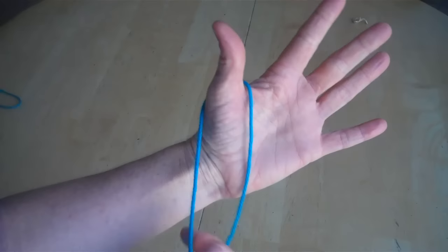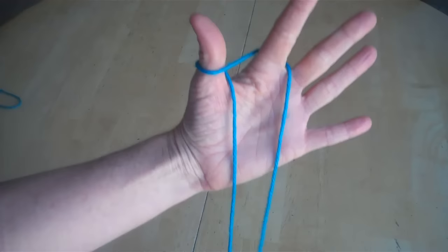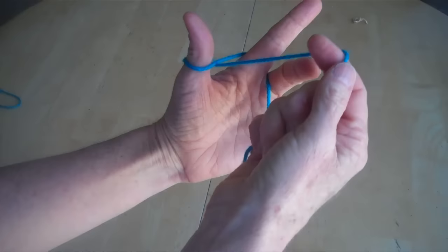Start with it wrapped around your thumb. Take the string that's closest to you and wrap it around behind your next finger, your pointer. We're going to repeat this for all your fingers. Take the string closest to you, put it around the next finger, being your middle finger.